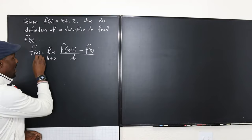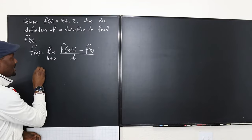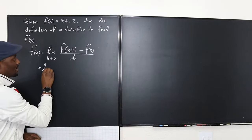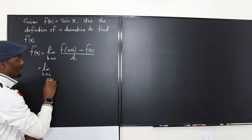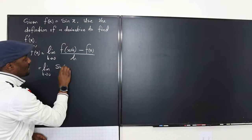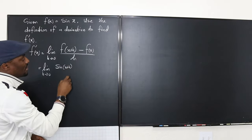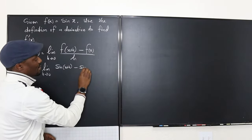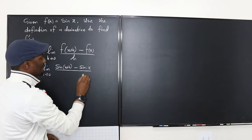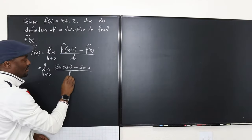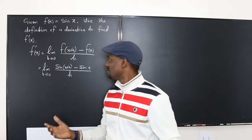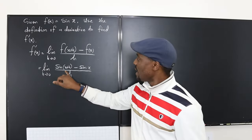Let's apply that to sine x and see what we get. So f prime of x, since f(x) is sine x, is going to be the limit as h goes to 0 of sine(x + h) minus sine x, all divided by h. At this point it looks like nothing is happening, but now we have a sum of angles.